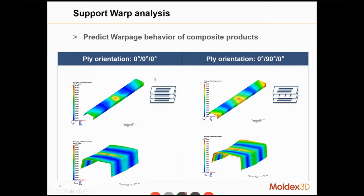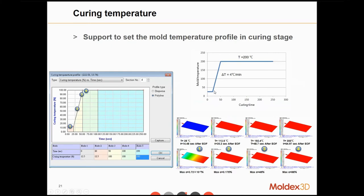In Moldex3D, it supports warpage analysis, so we can see the deformation due to volumetric shrinkage. With different ply orientations — for example, on the left-hand side all plies have the same orientation, and on the right a different orientation is used in the middle ply — we get different deformation results. The case with all the same ply orientation actually shows less deformation, while using a different orientation in the middle ply results in slightly more deformation.